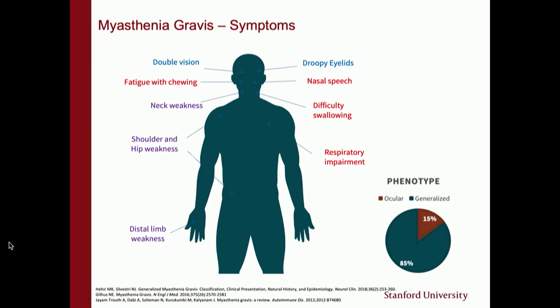The symptoms of myasthenia gravis can be separated into ocular and generalized. Thinking back to Bill — he's at work, looks at his hands, and sees double. The majority of MG patients at onset will have double vision or droopy eyelids. But over time, 85% will have generalized symptoms, moving to the bulbar muscles: speaking, swallowing, breathing, neck weakness, and chewing issues. They can also have arm and leg weakness, which tends to be proximal — trouble raising arms or getting up from a chair. Only about 15% remains restricted to the eyes.